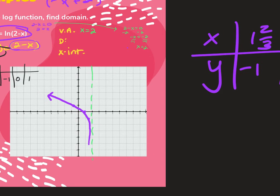What's the domain? Negative infinity to 2. Domain goes left to right on the graph: the arrow points to negative infinity on the left, and it goes up to 2 without touching 2, since that's the vertical asymptote.